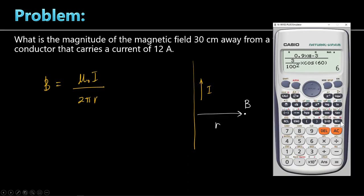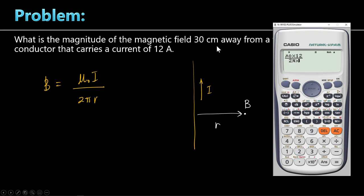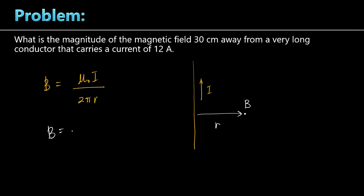In the calculator: mu-not (constant 33, the permeability of free space) times current 12 amperes, divided by 2 pi times R equals 0.3 meters. The answer is 8 micro Tesla. The unit of magnetic field is Tesla, so this is 8 micro Tesla — a small field. Compare that to the 6 Tesla computed earlier, which is an extremely strong magnetic field.